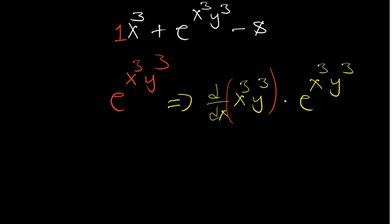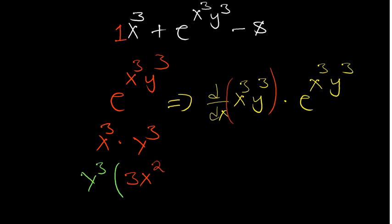We have a product of two different things — x³ and y³ — so this requires the product rule. If you don't know the product rule, watch the video linked in the description. Starting with y³, multiply by the derivative of x³. The derivative of x³ is 3x² — the power multiplies the coefficient and reduces by 1.